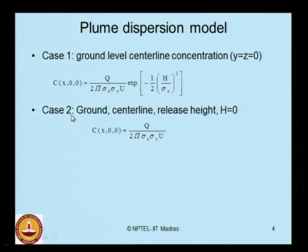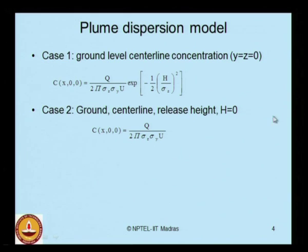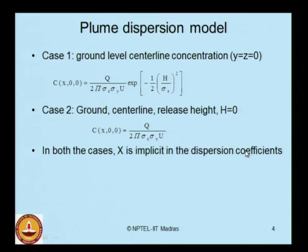Case 2 is for ground central line release, where height h is also taken as 0. This height term is removed from the equation, and substituting back into the principal equation gives the concentration expression. In both cases, x is implicit in the dispersion coefficients.